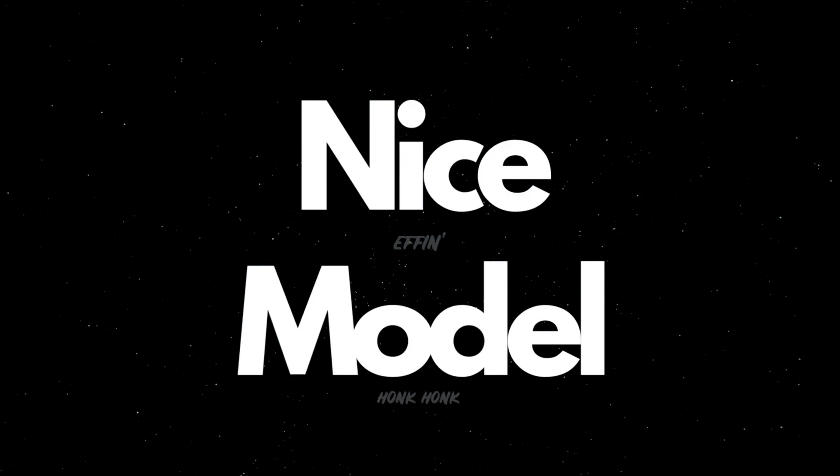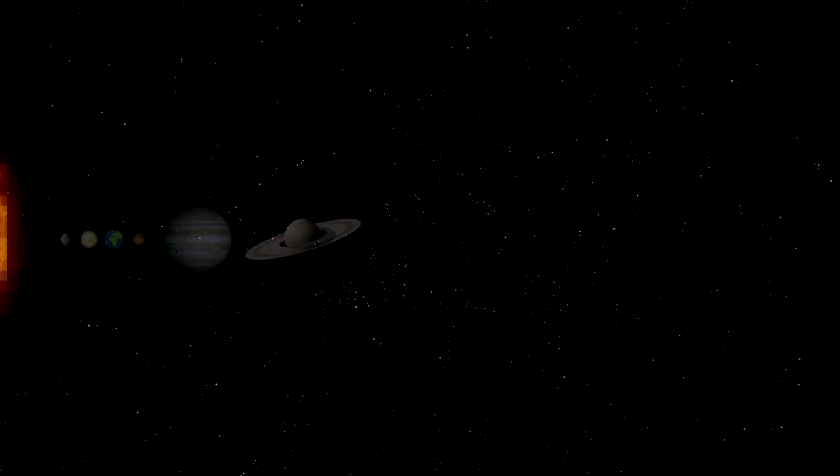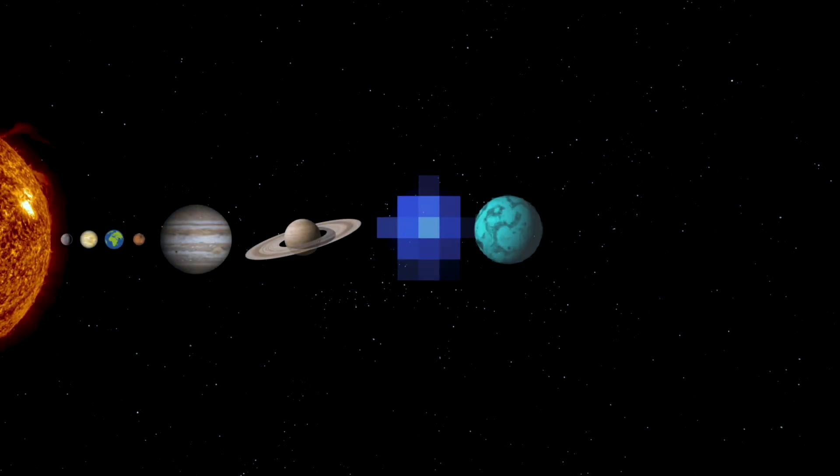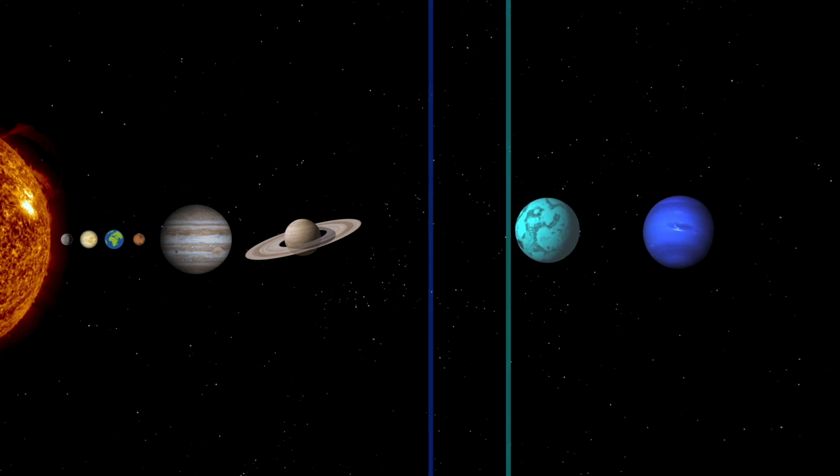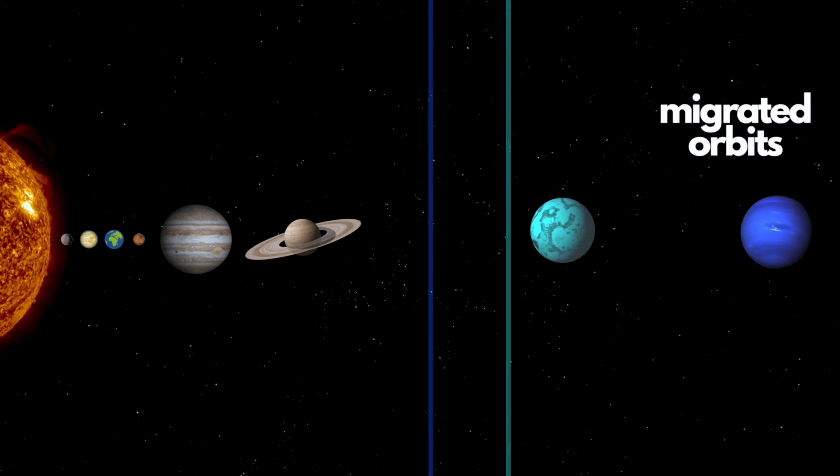As new planets form in a protoplanetary disk, some are going to float toward or away from their original orbit in the cloud due to their gravitational forces. This is called planetary migration. Think about it like this. This is the Nice model of planetary migration. And it says that Neptune and Uranus formed much closer to the sun and that Neptune was actually closer than Uranus at one point. But eventually, they both migrated outwards to where they are in orbit today.